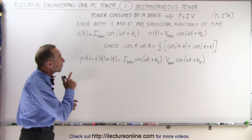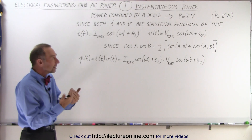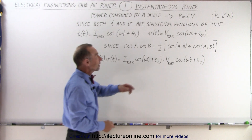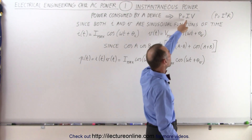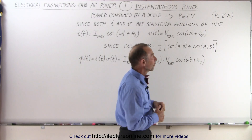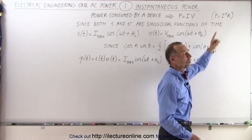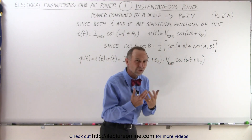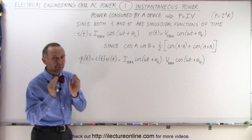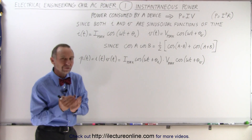We're going to start with the concept of instantaneous power. Generally, the power consumed by a device can be calculated by taking the product of the current through the device and the voltage across the device. We can also find the power consumed by taking the current squared multiplied by the resistance or impedance, but we have to be careful when dealing with power and impedance across the various phases.